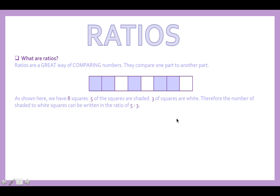The number of shaded to white squares can be written in the ratio of five to three. These two dots represent the word 'to', or 'to every' — five to every three. If the question said the number of white squares to shaded squares, you would have to write the three first. It depends which way the words are written as to which number comes first.